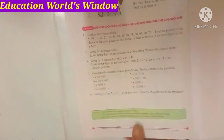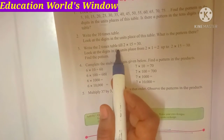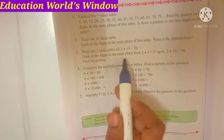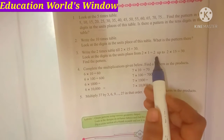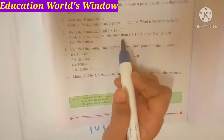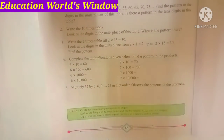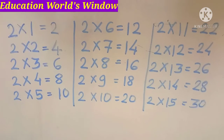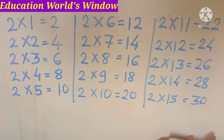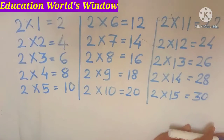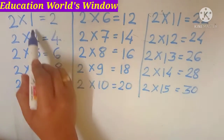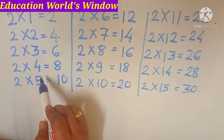Here is question number 3. Write the 2 times table till 2 multiplied by 15, which is 30. Look at the table — look at the digits in units place from 2×1, 2×2 up to 2×15 which is 30. Find the pattern — what is the pattern?